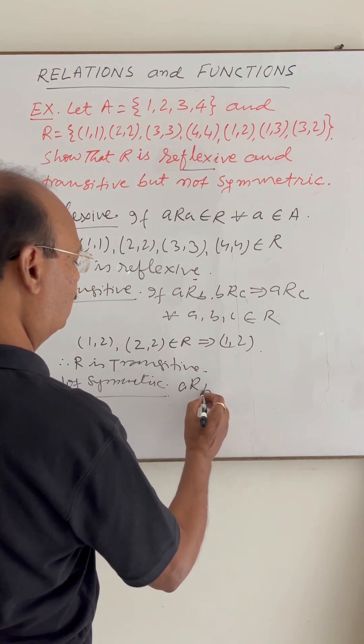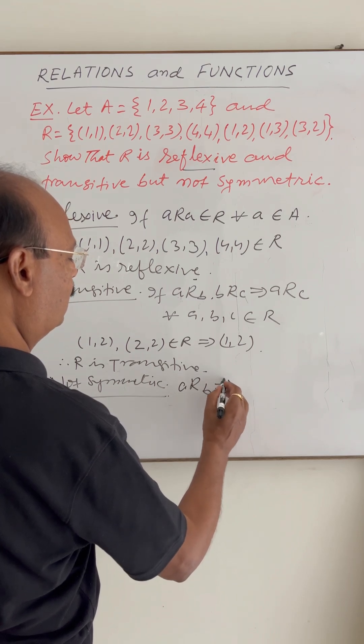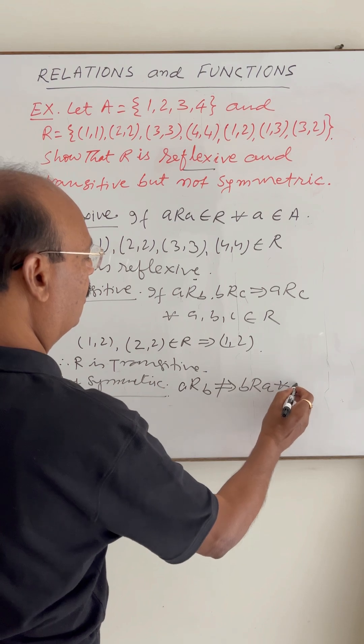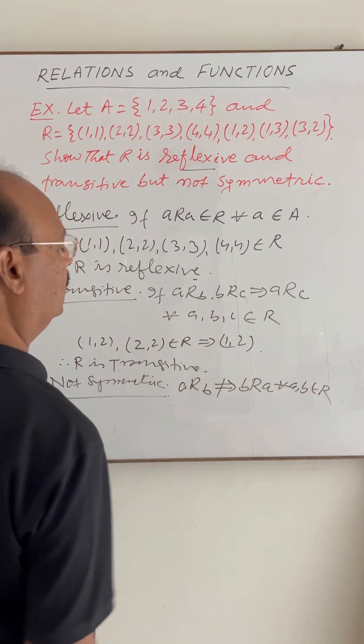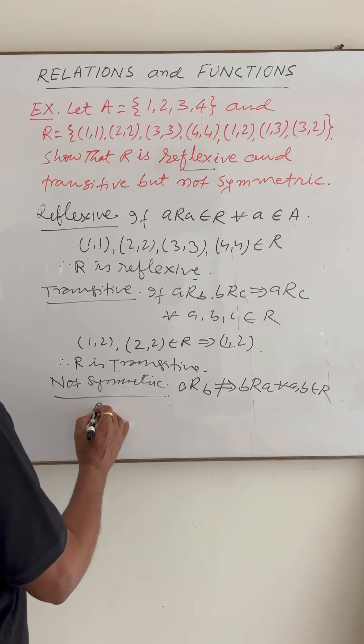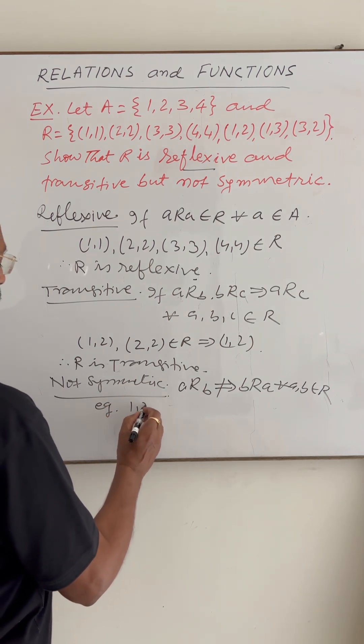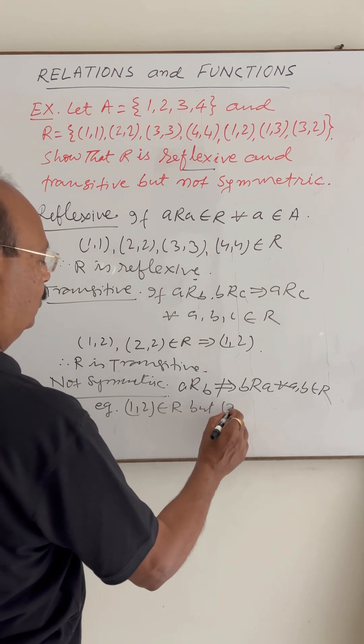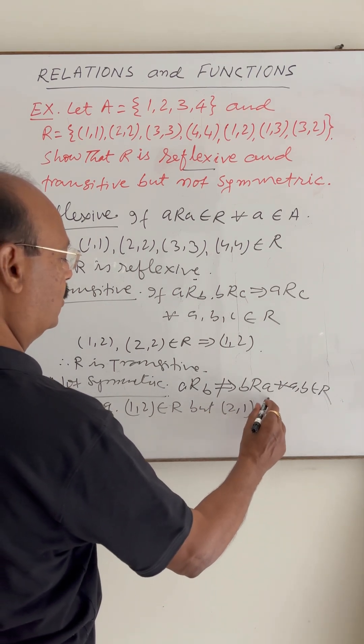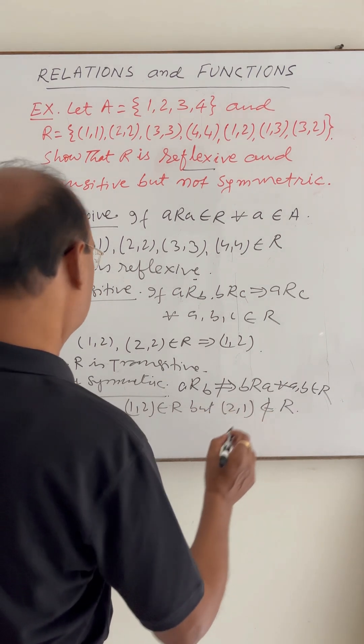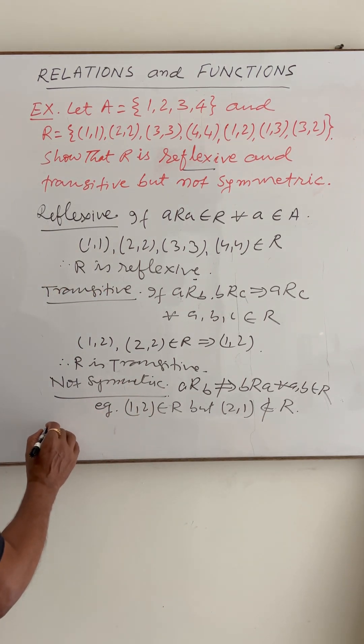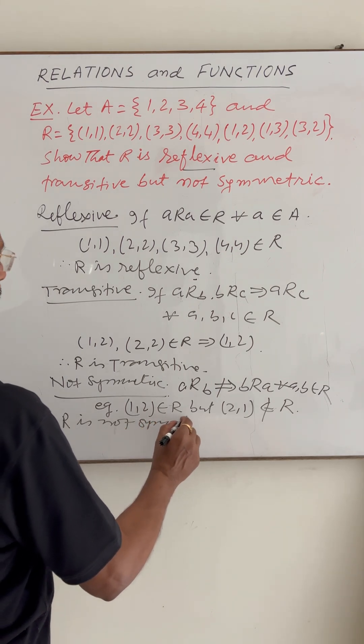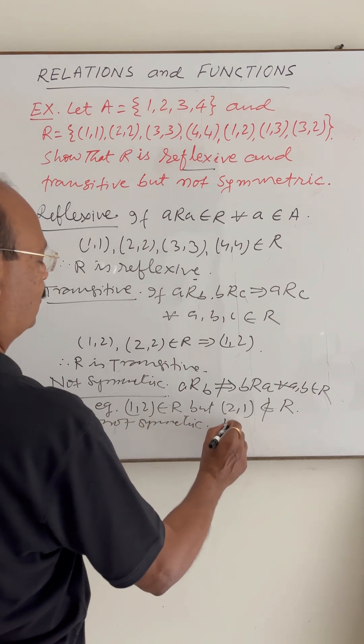So here, A R B is not implying B R A for all A and B belonging to this relation R. As for example, here (1,2) belongs to R but (2,1) does not belong to R. So this is not symmetric, therefore, R is not symmetric, hence proved.